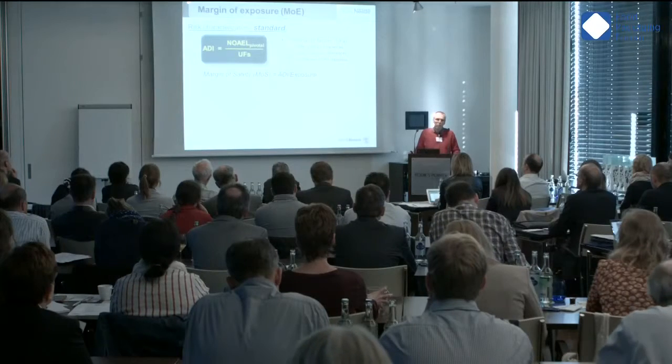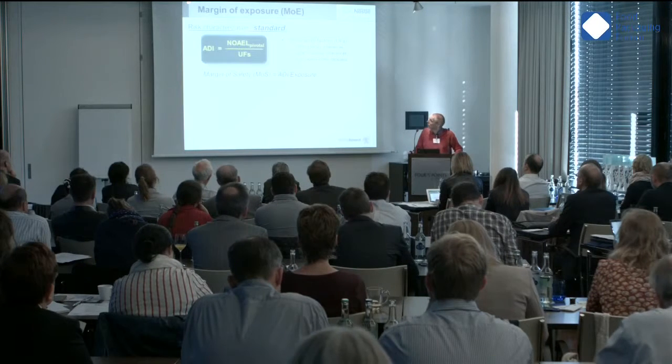Secondly, something important in the food sector is to have a quantitative prediction. To know that a chemical has a high probability to be neurotoxic — you cannot do much with that. What is important is to have a value that you can use and compare to exposure. Because in the end, it's really the combination of exposure and toxicology which allows us to make decisions. This can be done through the margin of exposure.